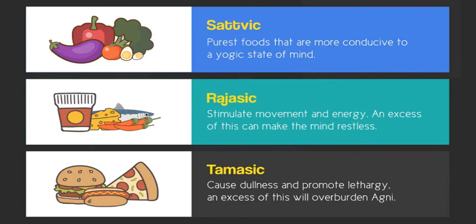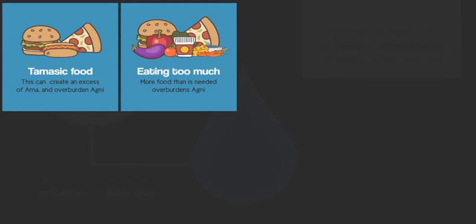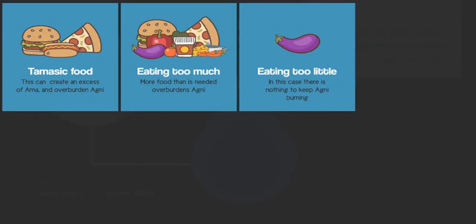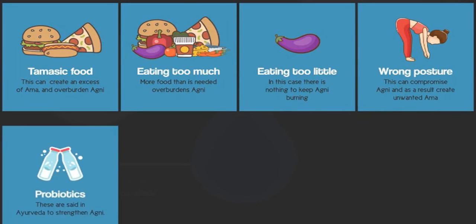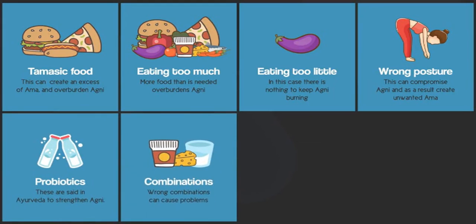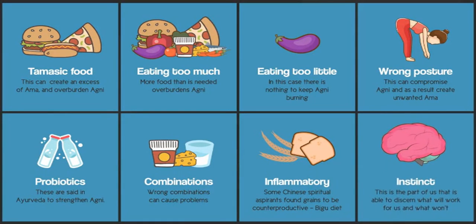So here are several things that the yogis found affect Agni. Tamasic food creates Amma, which can overburden the fire. Eating too much food in general overburdens the fire. Eating too little can cause the fire to dwindle and weaken. Wrong posture while eating can compromise the fire working properly. Probiotic foods are said to strengthen Agni. Wrong food combinations can do the same. So you have to experiment to be sure. It's possible that for some, grains are unhealthy and can overburden the system. See the Chinese Bigu diet. All of these can create the aforementioned conditions. Often, the bodily intelligence will inform us as to the effect of a food. We call this precious faculty instinct.